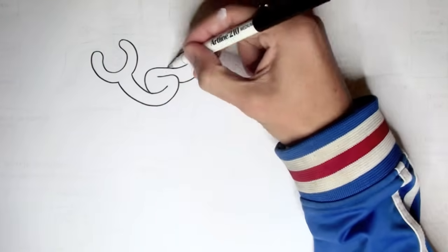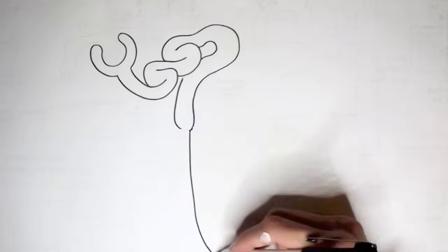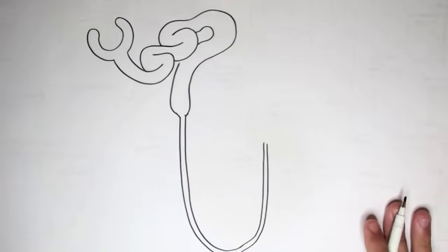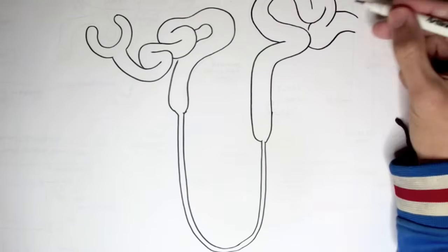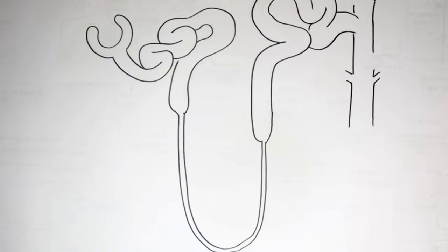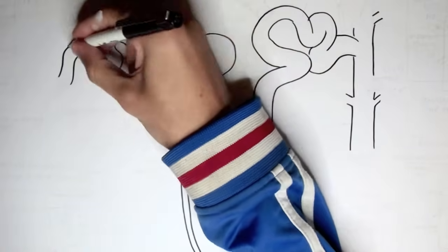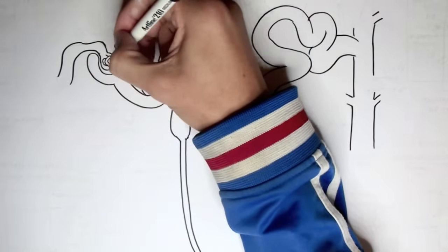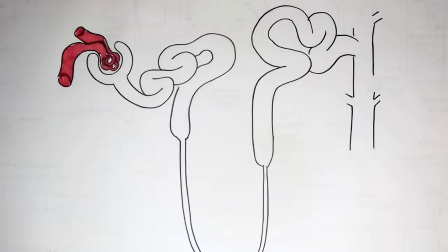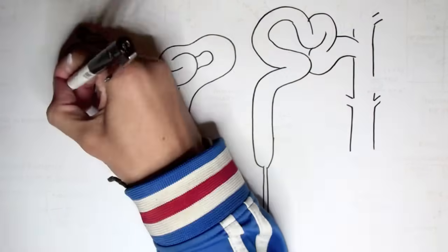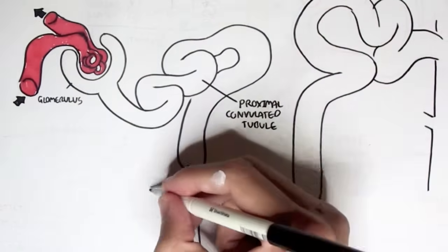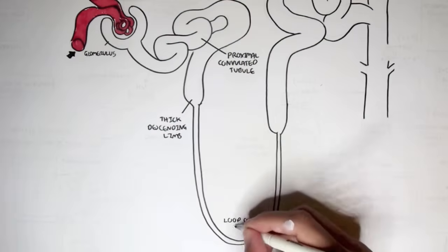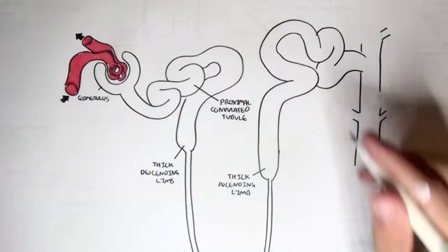Because diuretics elicit their function on the nephron of the kidneys, let us recap the structure of the nephron and see where these diuretics specifically have their function along the nephron tubule. Here we have the glomerulus with the afferent arteriole coming in and the efferent arteriole coming out, the proximal convoluted tubules, the thick descending limb, the loop of Henle, the thick ascending limb, the distal convoluted tubules, and the collecting duct.